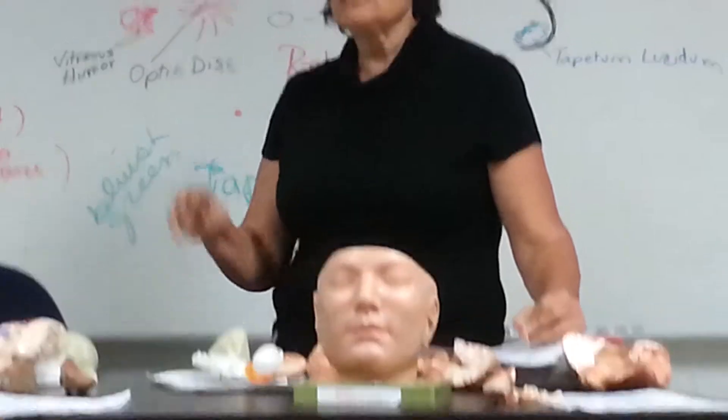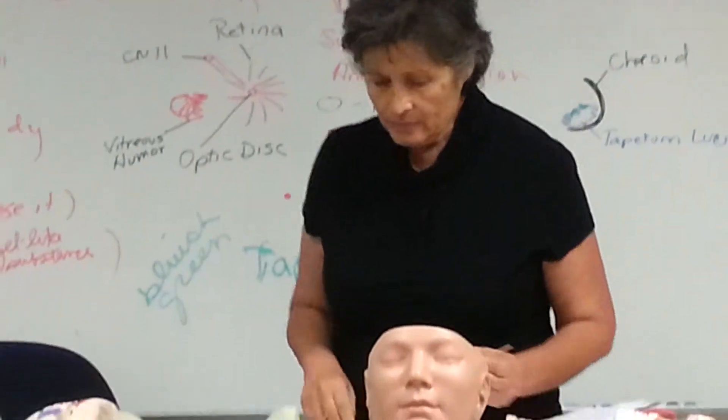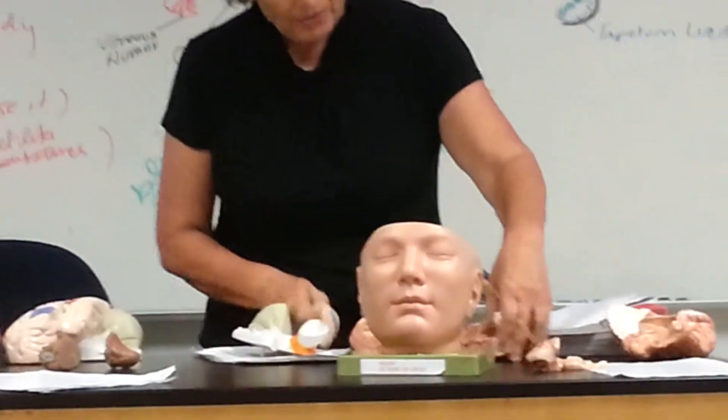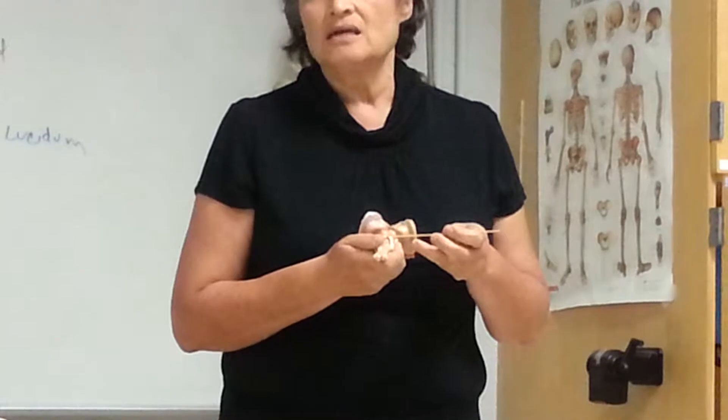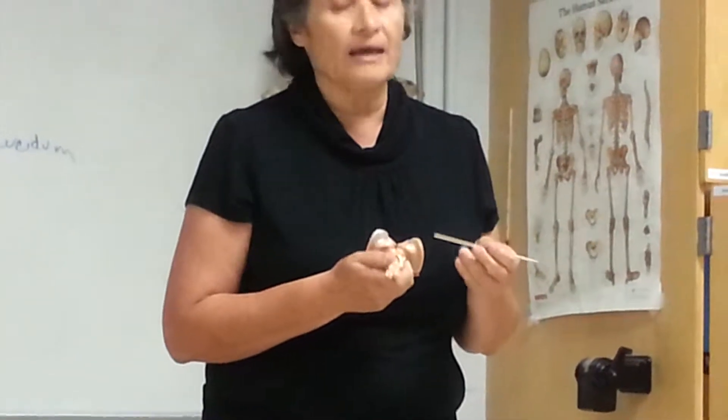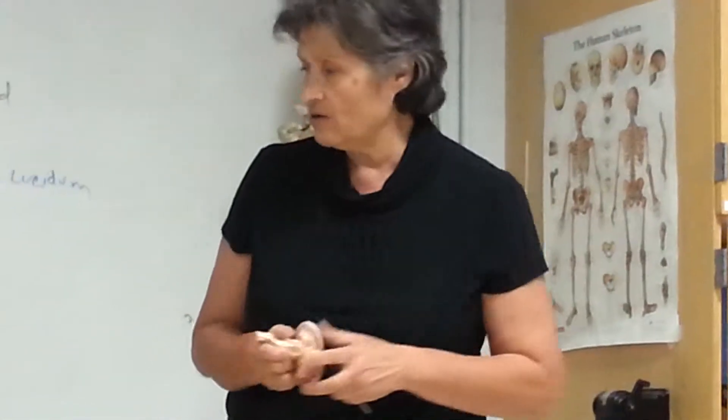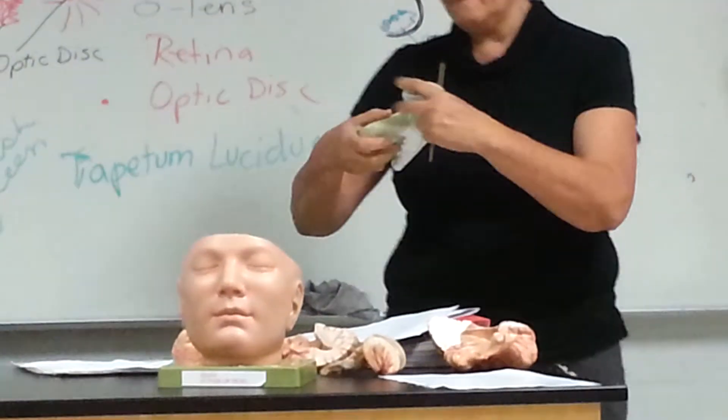Corpora quadrigemina means four bodies. On this model, if you put the brain stem together, you can see the four bumps. On top is your superior colliculus; on the bottom is the inferior colliculus — plural would be colliculi, so superior and inferior. This model doesn't show it as well — it just kind of shows these two ridges.